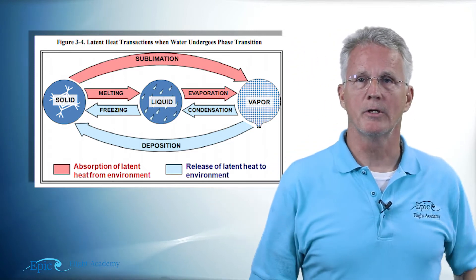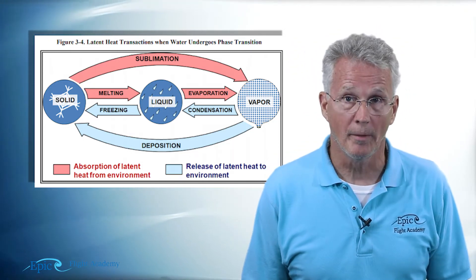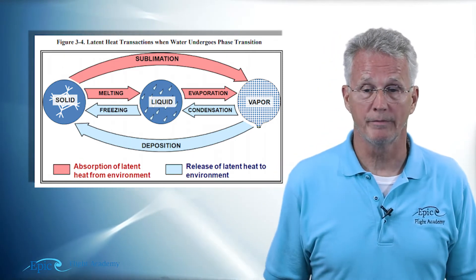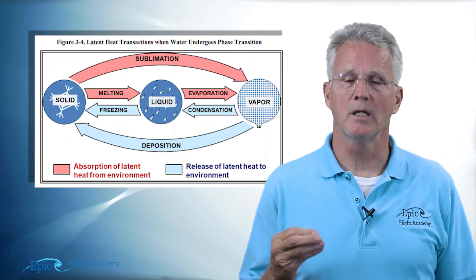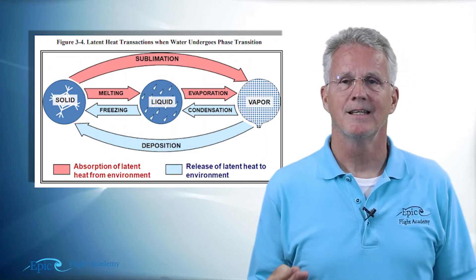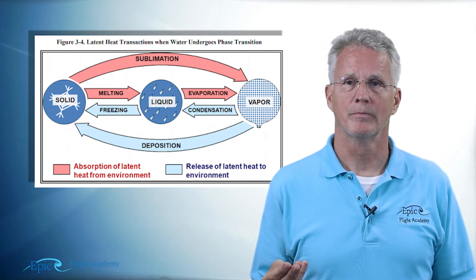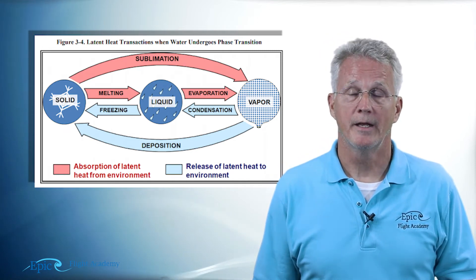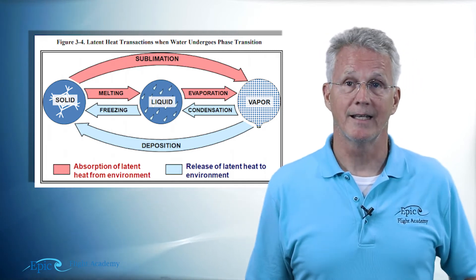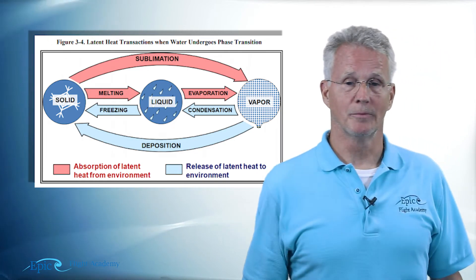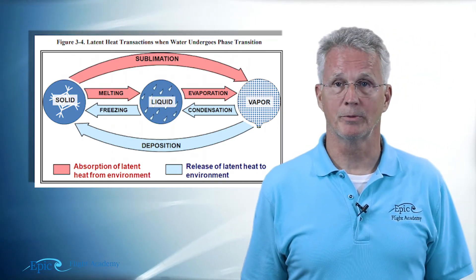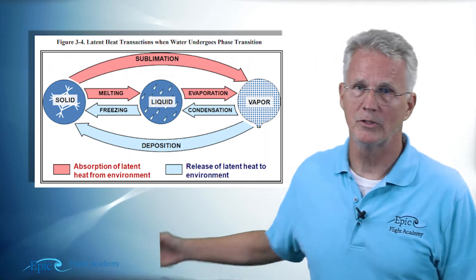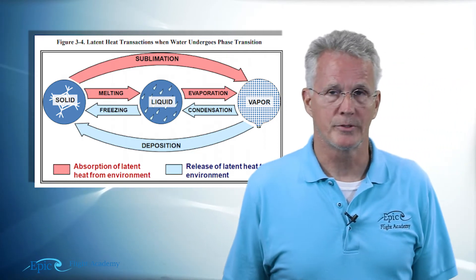The reverse occurs moving from right to left in the diagram. Starting with water vapor, if it releases some of its latent heat into the atmosphere, it becomes a liquid. If that liquid continues to release its latent heat, it becomes a solid. And it is possible to go directly from a vapor to a solid — that is called deposition.